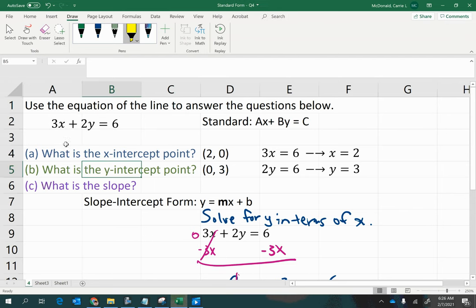And likewise for the y-intercept, just pretend that this has zeroed out, so ignore it. And then you can see that you just have to divide both sides by 2 to get your answer 3. And then the slope.